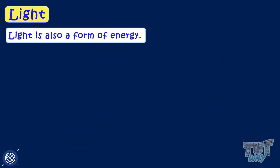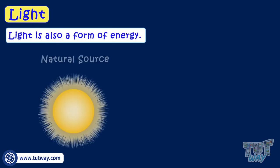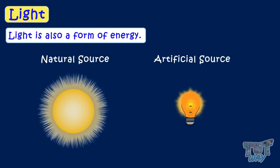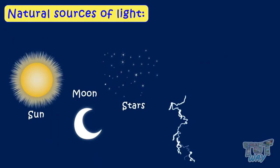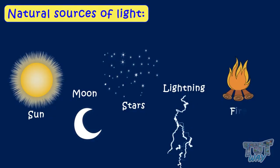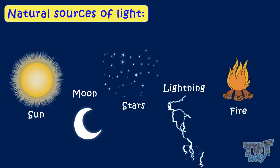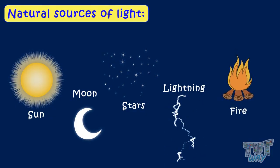Light can be from a natural source or an artificial source. Now let's see some natural sources of light. Light from sources like the Sun, Moon, Stars, Lightning, and Fire are the natural sources of light.